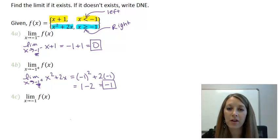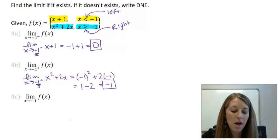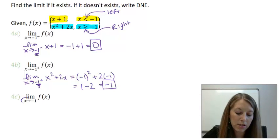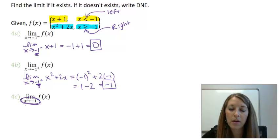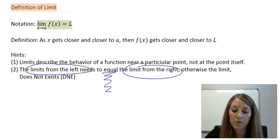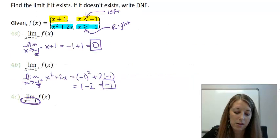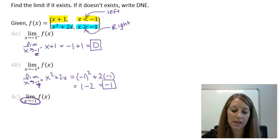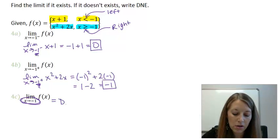Now I'll draw a graph to help visualize what's happening. But before that, we should already know the answer to Part C. For the overall limit as x approaches negative 1, the limit from the left must equal the limit from the right. The left-hand limit gave us 0, and the right-hand limit gave us negative 1. Since those don't match, our overall limit does not exist.